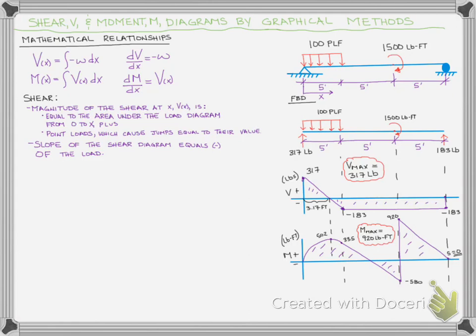If we had determined the shear at zero feet and again at five feet using this area method, we'd want to know how to connect those lines. So we look at the actual value of the load: if the load is constant, we have a constant slope. With the load increasing or decreasing, we'd have an increasing or decreasing curving slope — parabolic. So we use the magnitude of the load to determine that slope.